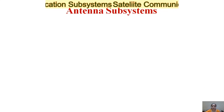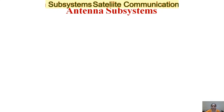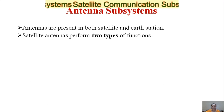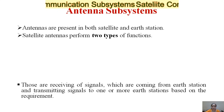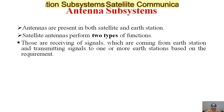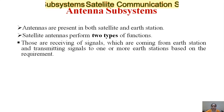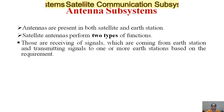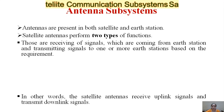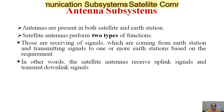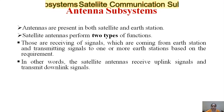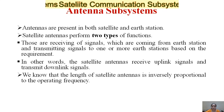The next subsystem is the antenna subsystem. Antennas are present both at the satellite and the earth station. Satellite antennas perform two types of functions: receiving signals coming from the earth station and transmitting signals to one or more earth stations. In other words, satellite antennas receive uplink signals from the earth station and transmit downlink signals to the earth station.